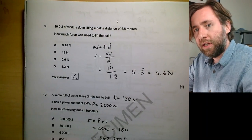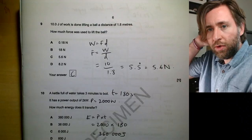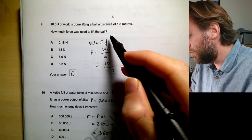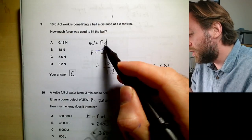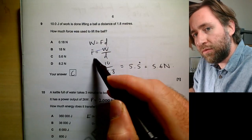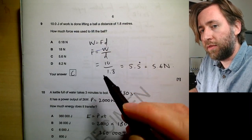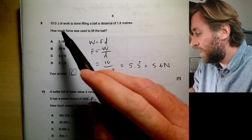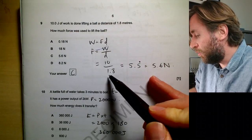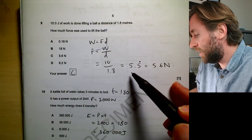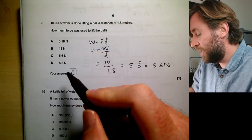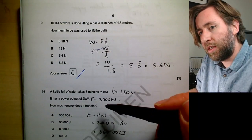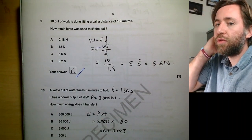10 joules of work is done lifting a ball a distance of 1.8 meters — how much force was used? Work done equals force times distance, so rearrange to force equals work done over distance. Put in 10 divided by 1.8, do some rounding to get 5.6 N, and the answer is C. These are only worth one mark but there's quite a lot of thinking, so if you're struggling save them and come back later.